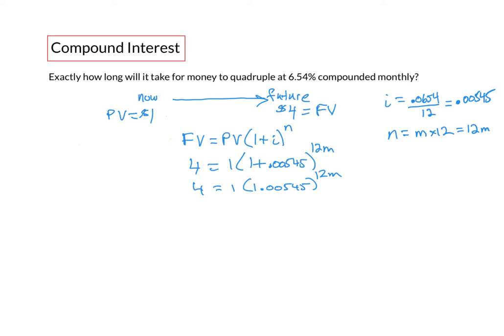So 4 equals 1 times 1.00545 to the 12m. Now we can do some cleanup here. 1 times anything is just going to be that value so we can get rid of that. Or if you want you can divide both sides by 1 and we'd end up with 4 equals 1.00545 to the 12m.